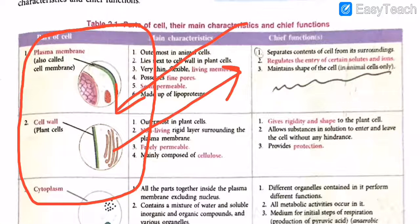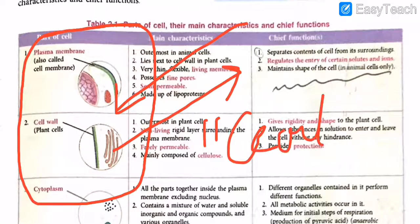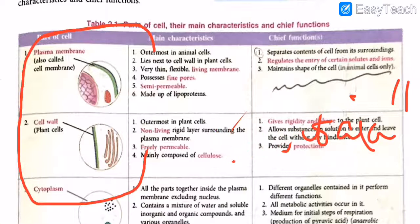The last point is that it is made up of lipoproteins. Its chief functions are: it separates the contents of the cell from its surroundings, it regulates the entry of certain solutes and ions, and it maintains the shape of the cell in animal cells only — because in plant cells, the cell wall maintains the shape and gives the rigidity that plants need. The fine pores allow certain substances to come in and go out. So let's keep the cell membrane and move on.